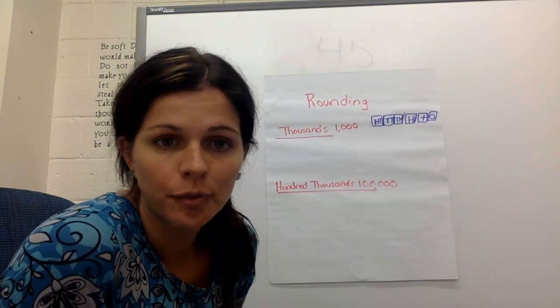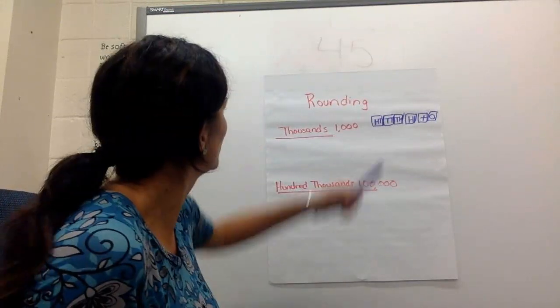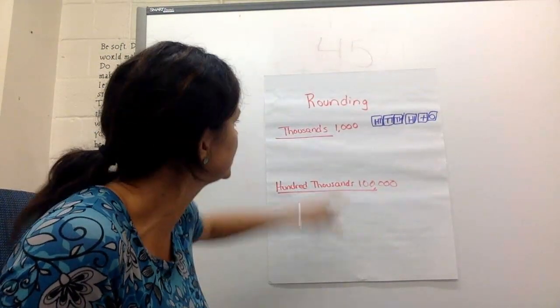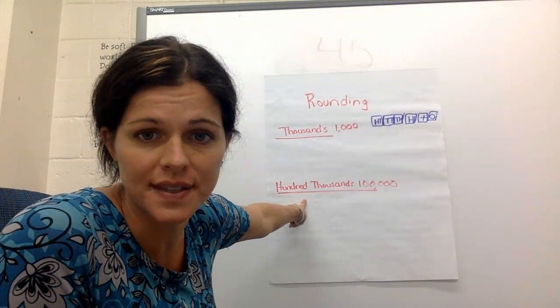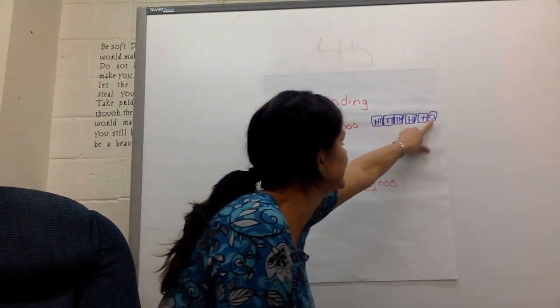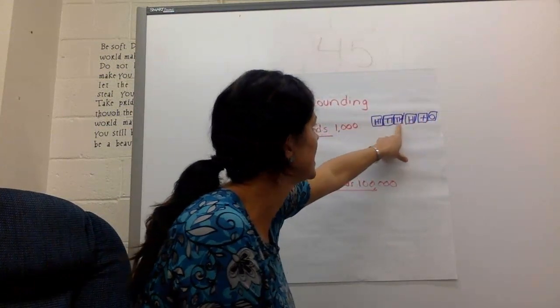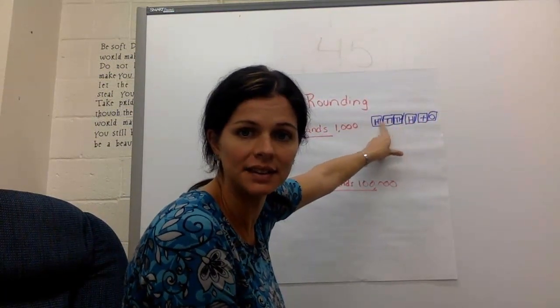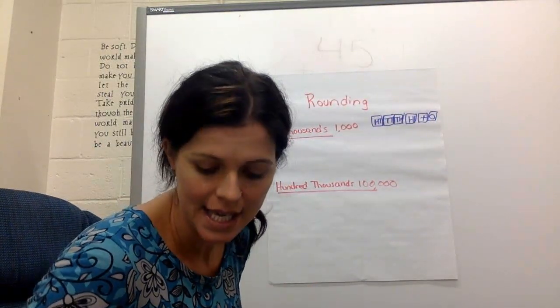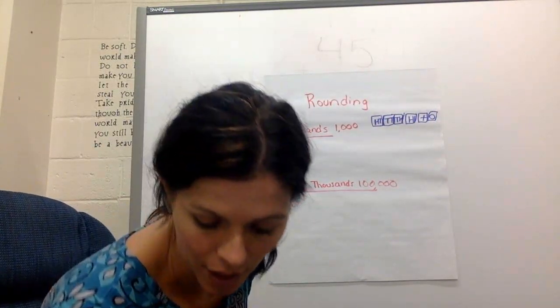I'm going to do some for you to help you. So today's activity wants us to round to the nearest thousands and then later we're going to do round to the hundreds of thousands. So up here I like to label: ones, tens, hundreds, thousands, ten thousands, hundred thousands. That just helps me remember what place each spot is.